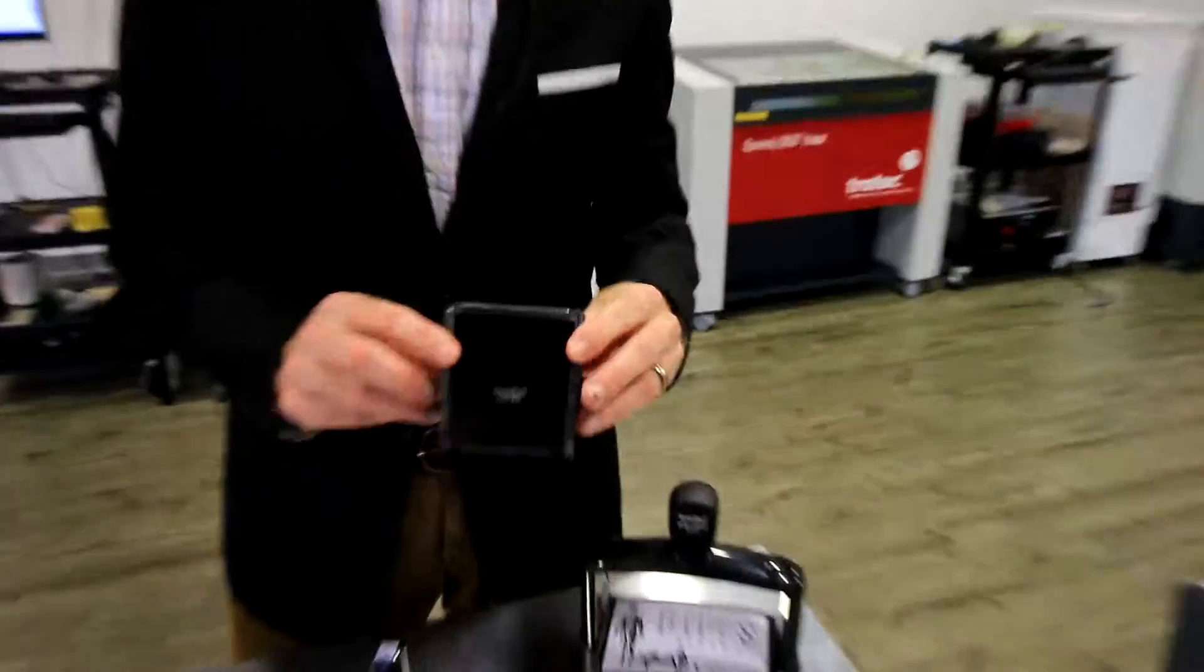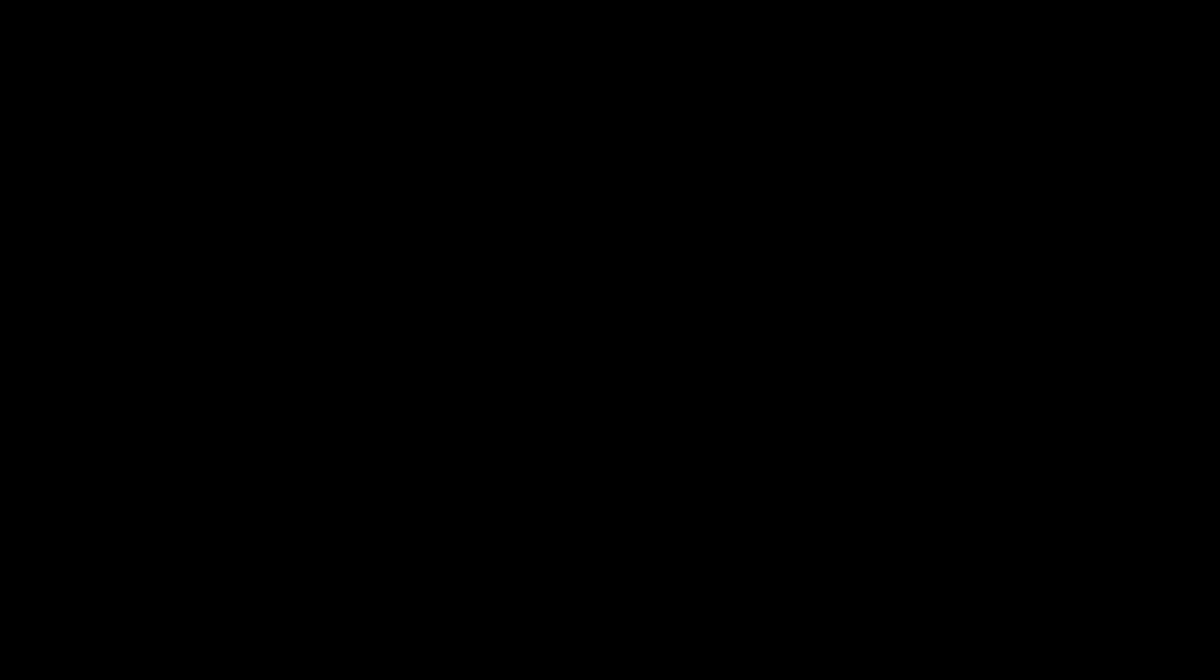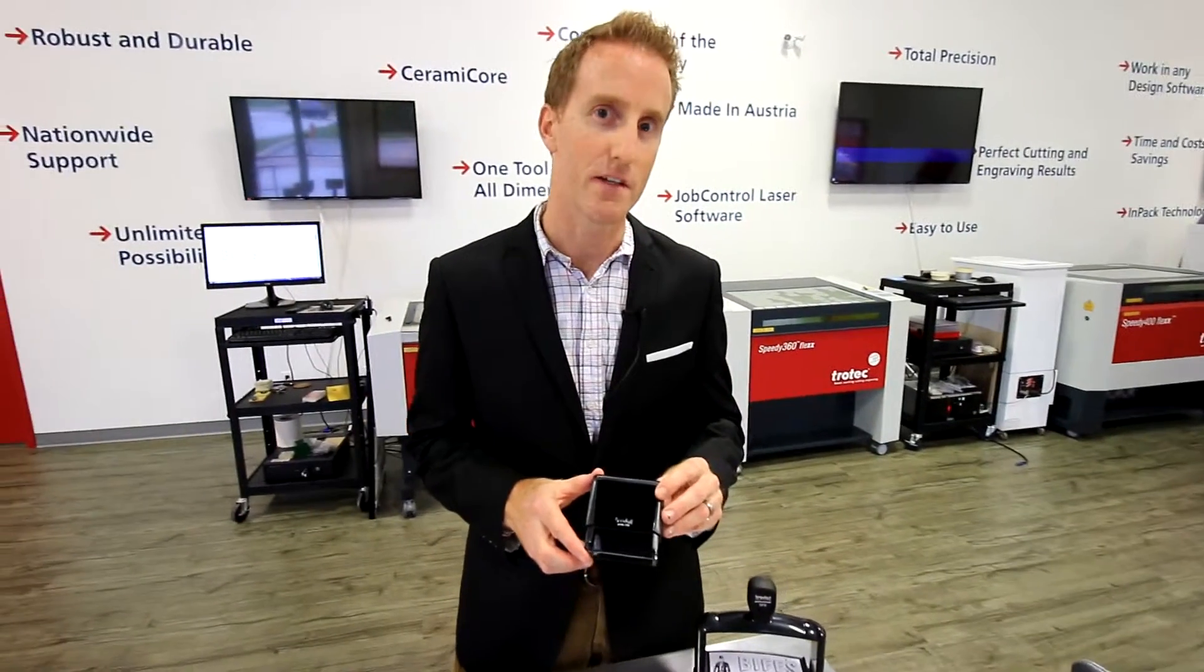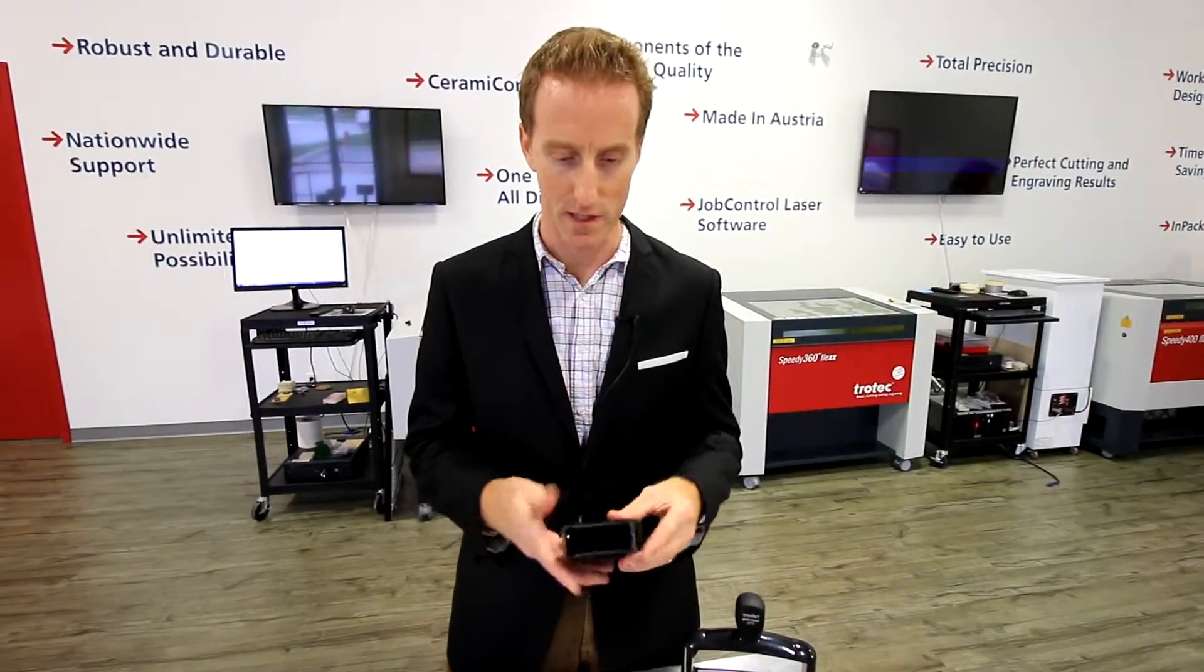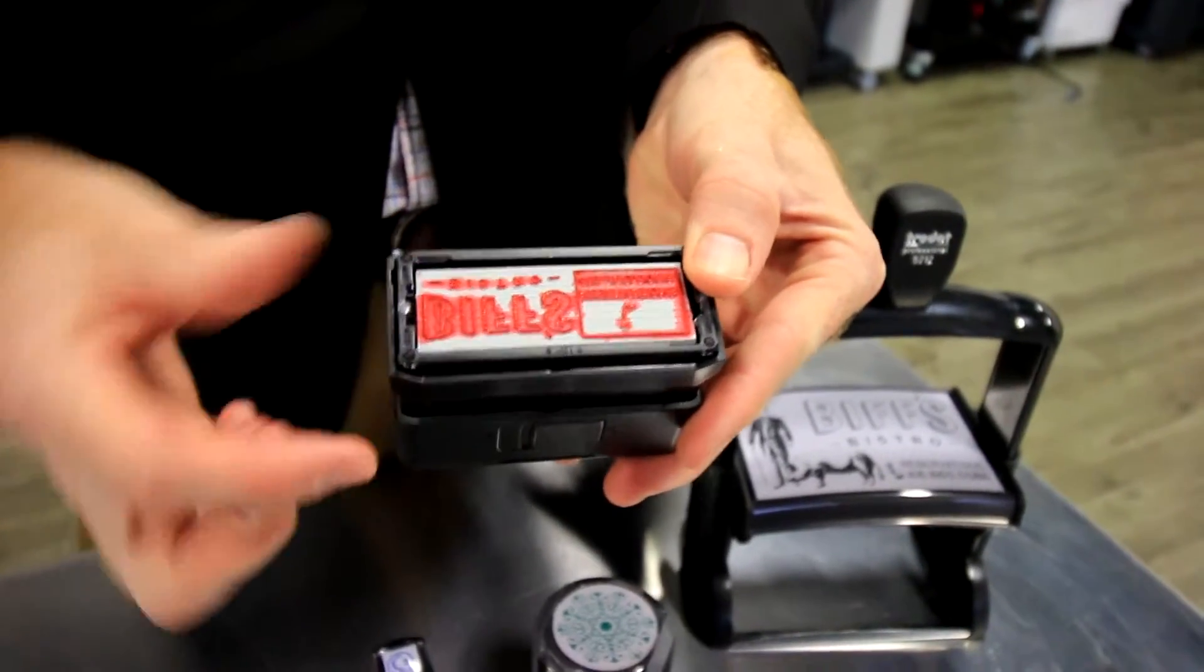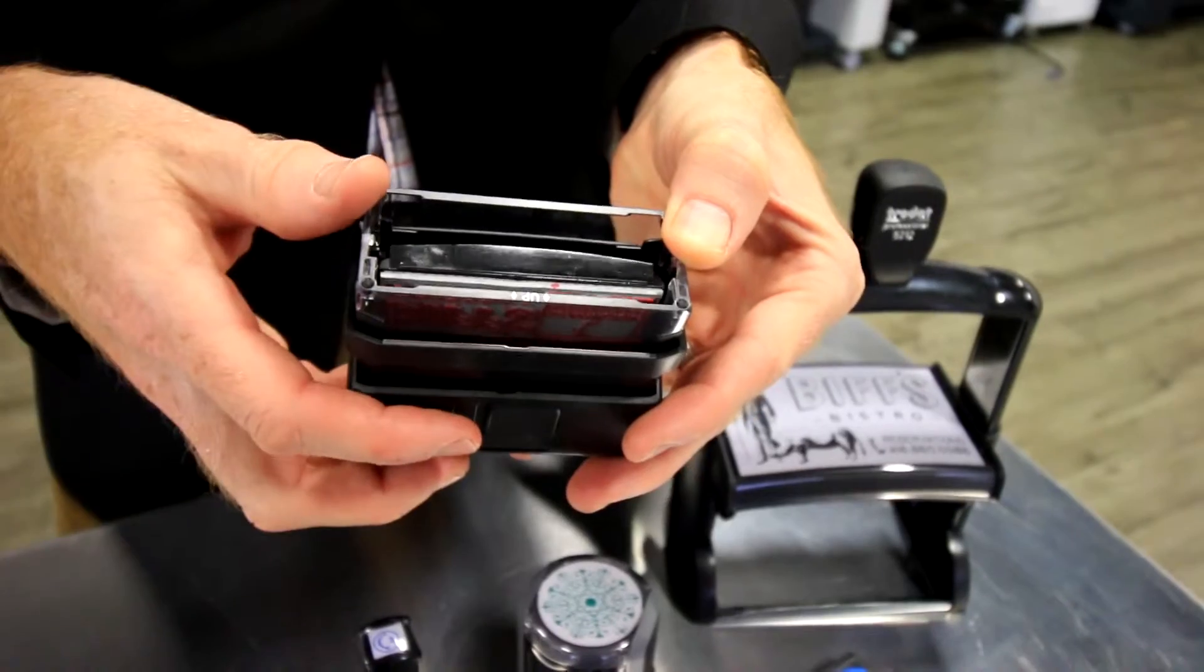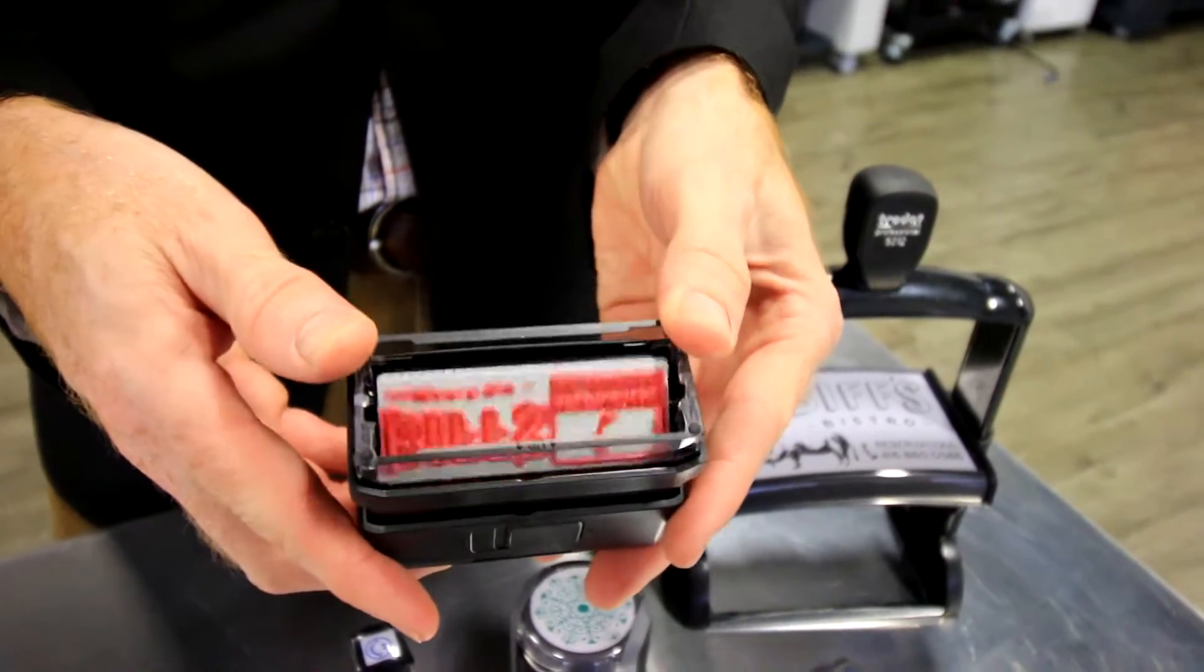Today we're going to make a 4915 using a single red ink pad. So this is a Trotec 4915 self-inking stamp which means that the laser rubber is actually attached right in the bottom here and there's a red ink pad integrated into the stamp and the spring action actually brings it up and down.